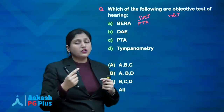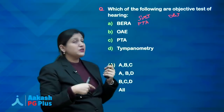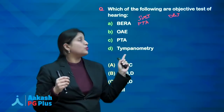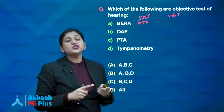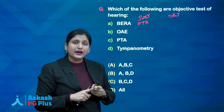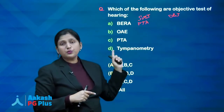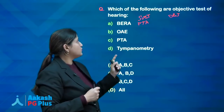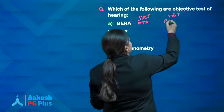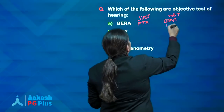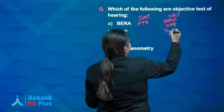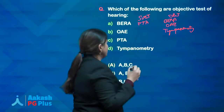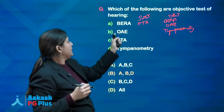Pure tone audiometry tests both air conduction and bone conduction. It is the most common test for hearing assessment but has fallacies — it cannot be used in malingering patients, those with mental retardation, or those who cannot respond. It also cannot be used alone for a disability certificate. The objective tests are BERA, OAE, and tympanometry — so the answer is A, B, and D.